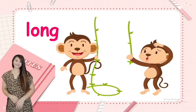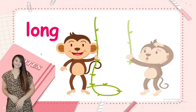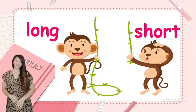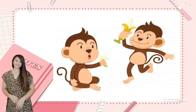Next, we have long and short. This monkey is holding a long vine — long. And this monkey is holding a short vine — short. Long, short. So long and short are opposite ways.